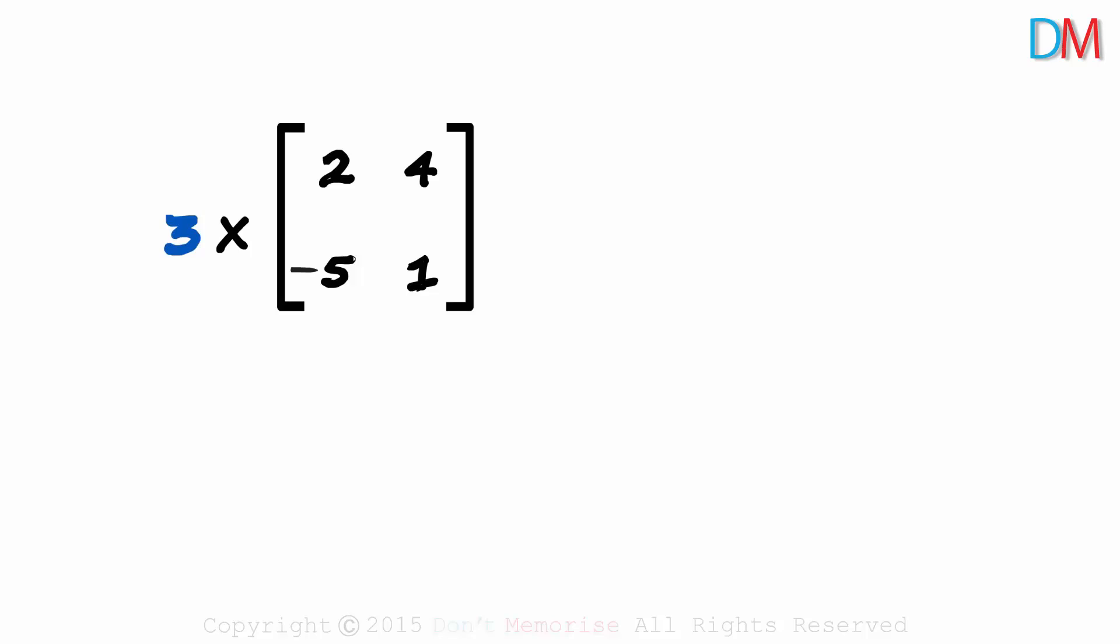To get the resulting matrix, each element of the matrix is multiplied with this number. Let's see what the resulting matrix looks like. The order of the resulting matrix will be the same as the order of the original matrix. The original matrix is of the order 2 by 2, so the resulting matrix will also be of the same order.